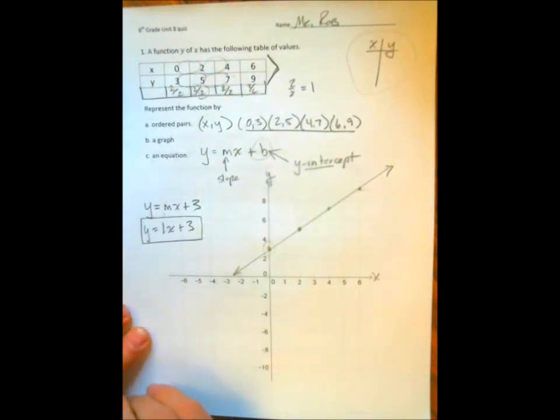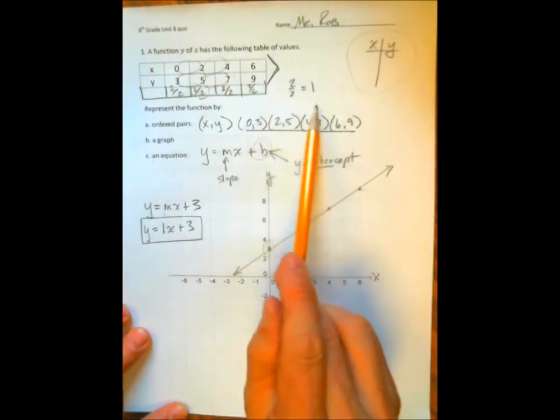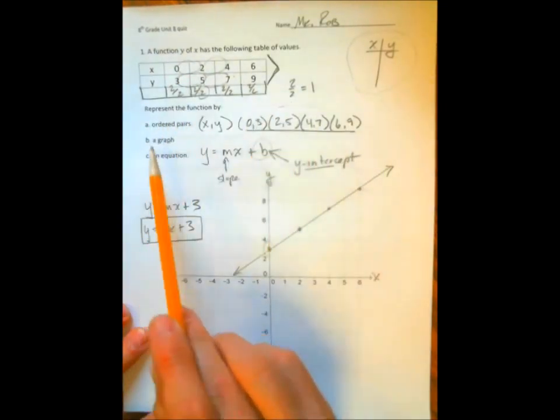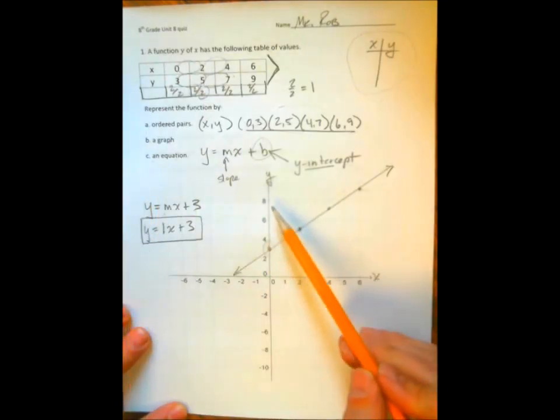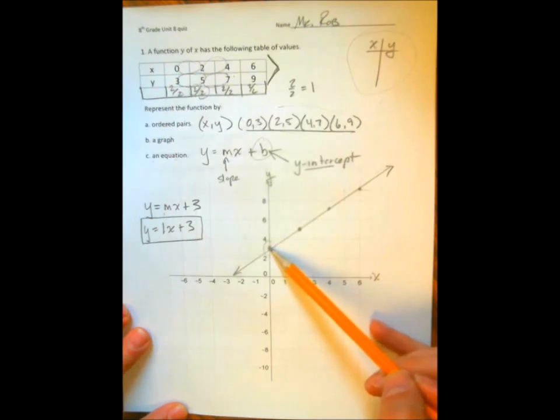And that's our equation. So we have represented this equation by ordered pairs, by a graph, and by an equation given by y equals 1x plus 3, which is the slope up 1 over 1, plus 3.